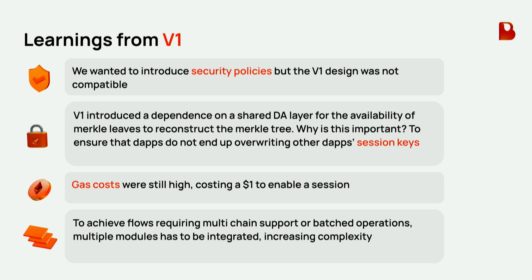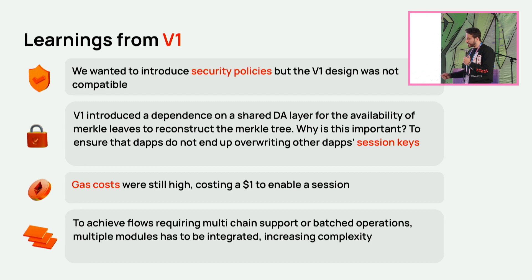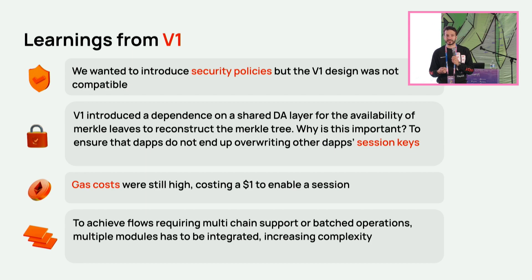As we went through this, there were a lot of learnings from V1. We wanted to introduce more generalized security policies, but the V1 design was not that compatible. V1 also had a dependence on an off-chain layer, which led to complications if a user had a session key on one app and another on a different app — what if there was a collision of session keys? Gas costs were also high — I remember paying about a dollar to enable a session, which for traders isn't a lot, but for any simple application it's still a high amount. And to achieve multi-chain transaction flows, developers had to integrate different modules, making the integration complex.